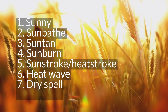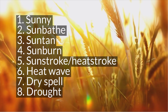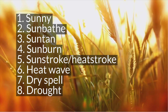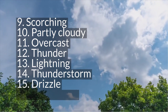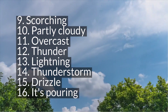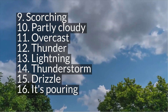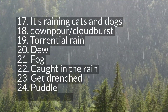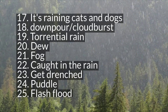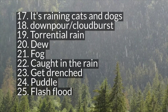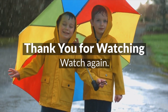So the words we just learned are: sunny, sunbathe, suntan, sunburn, sunstroke or heatstroke, heatwave, dry spell, drought, scorching, partly cloudy, overcast, thunder, lightning, thunderstorm, drizzle, it's pouring, it's raining cats and dogs, downpour or cloudburst, torrential rain, dew, fog, caught in the rain, get drenched, puddle, and flash flood. Now it's your turn — watch the video again, learn all the words, and use them in your sentences.